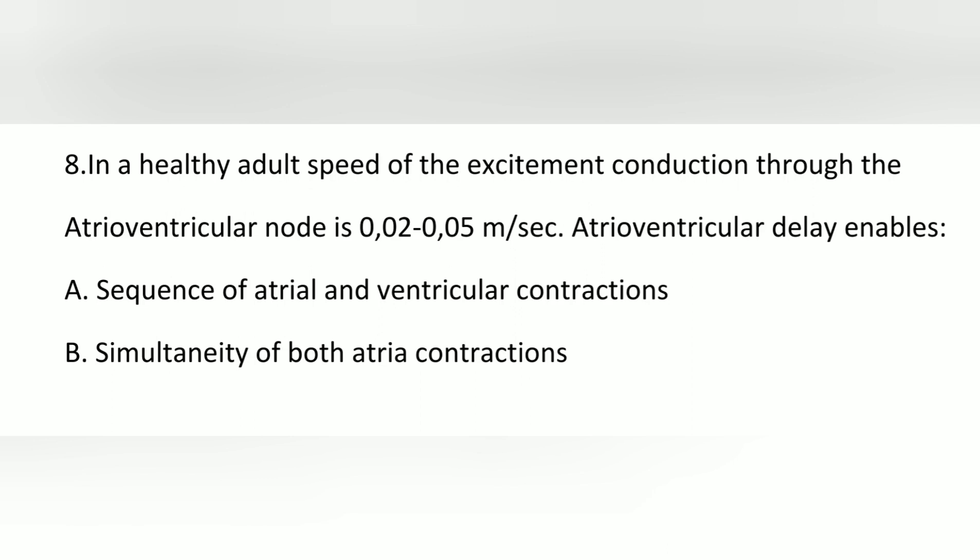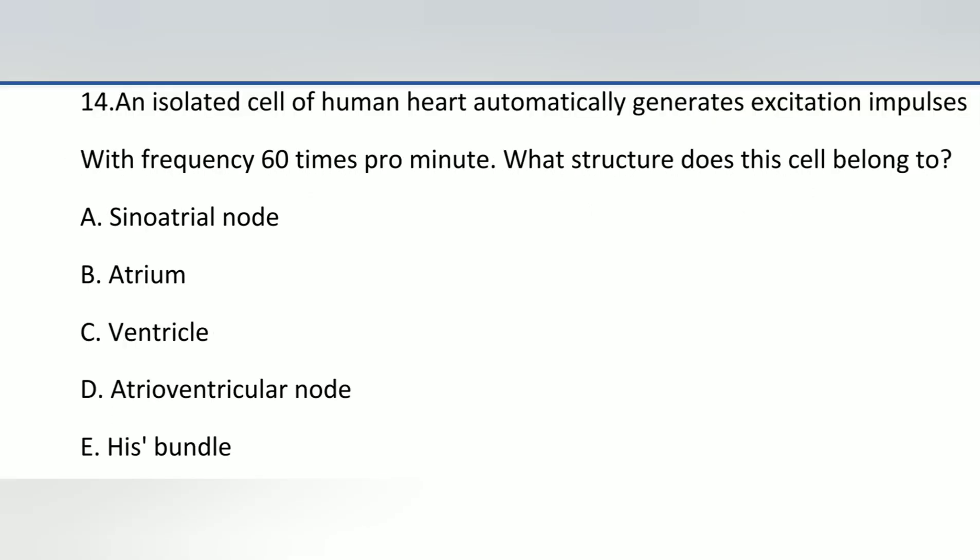The question about atrioventricular delay: the answer is the sequence of atrial and ventricular contraction, which demonstrates AV delay. Also, the shortest conduction speed is in the AV node at 0.02 to 0.05 meters per second.